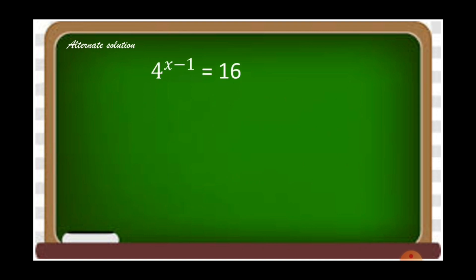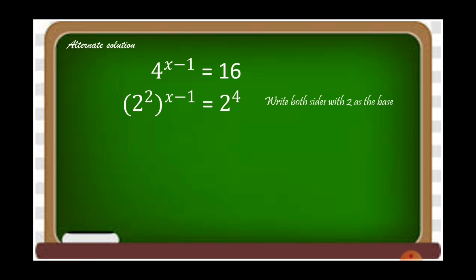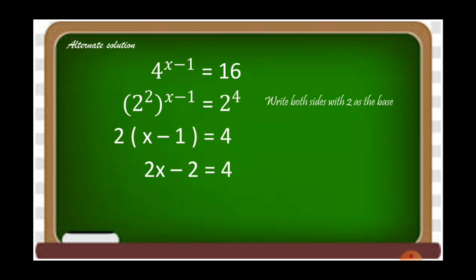Alternate solution: given 4 raised to (x minus 1) is equal to 16, we're going to write both sides with 2 as the base, because 4 and 16 can both be expressed in base 2. So 4 is 2 squared raised to (x minus 1), and 16 is 2 raised to 4. We have 2(x minus 1) is equal to 4, which gives 2x minus 2 is equal to 4, then 2x is equal to 6. Dividing both sides by 2, x is equal to 3 — the same answer as the first solution.